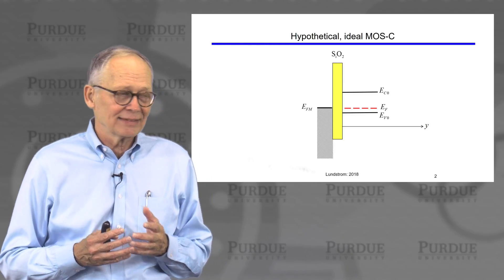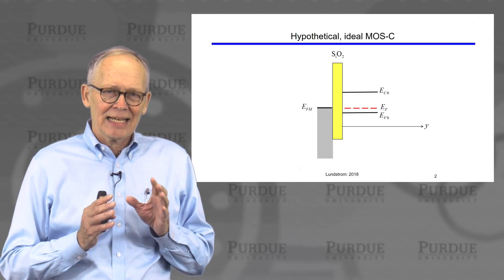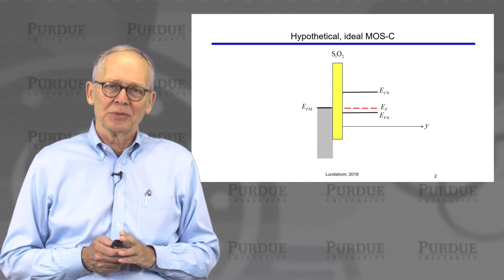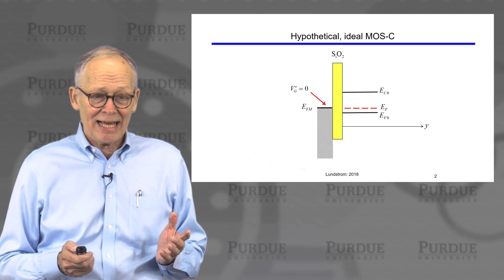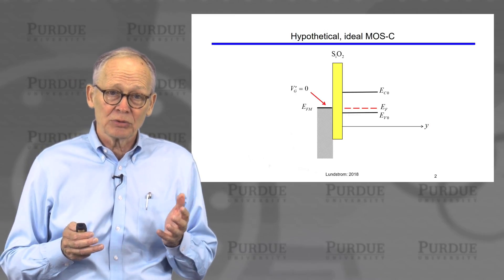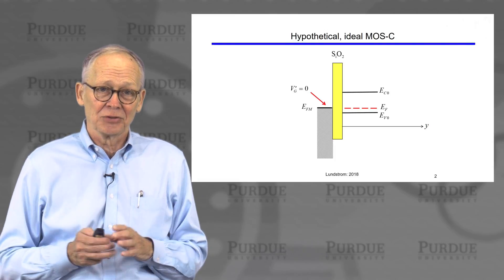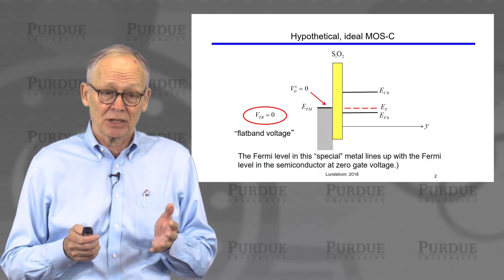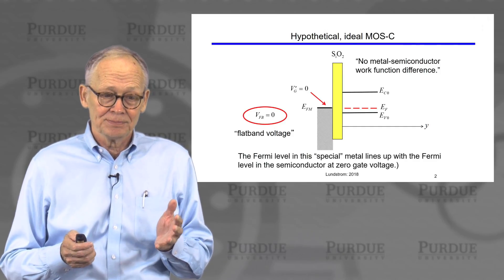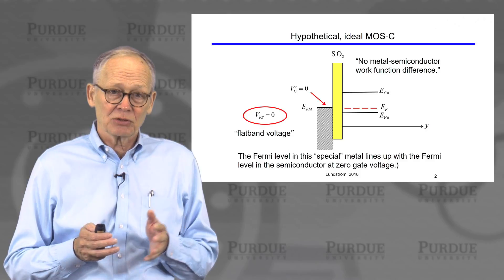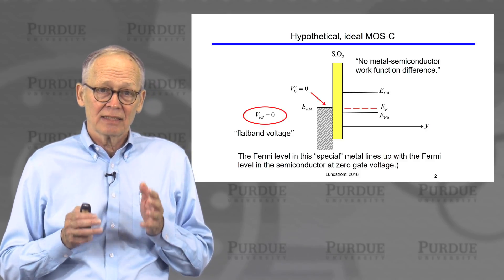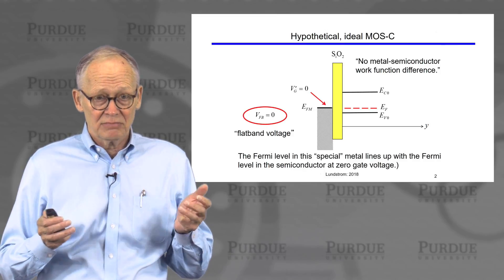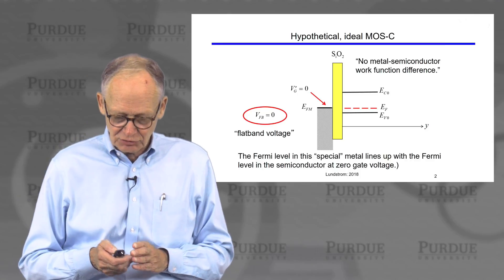What was hypothetical about our structure is that we assumed we had a metal and that the position of the Fermi level in this metal just happened to align with the Fermi level in the semiconductor. When that happens, when we apply no voltage to the gate, everything just lines up and the bands are flat. This really means that the metal-semiconductor work function difference is zero. In this special case, the flat band voltage is zero — when we apply zero voltage to the gate, there's no band bending, no electric fields in the structure.